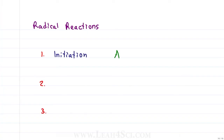Initiation is when a molecule undergoes homolytic cleavage, where the sigma bond breaks evenly so that each atom gets one electron — rather than heterolytic cleavage where one atom gets two electrons and the other gets none. These lone electrons are your very unstable radicals.